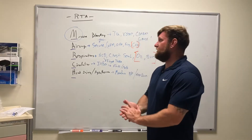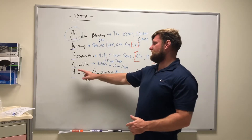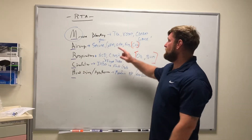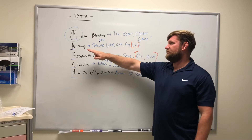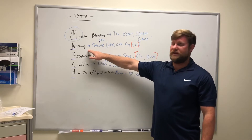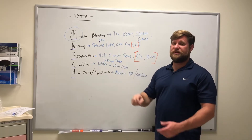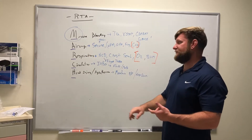In part three of our MARCH algorithm video, we're talking about circulation and head injury. We've already put a tourniquet on to address massive bleeding, secured the airway with an adjunct, got respirations addressed with an occlusive dressing or an NCD.